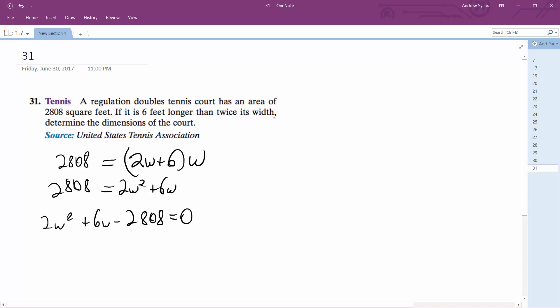Then we use the quadratic formula: negative b plus or minus square root of b² minus 4ac over 2a. So negative 6 plus or minus square root of 36 plus 4 times 2 times negative 2,808, all over 2a.